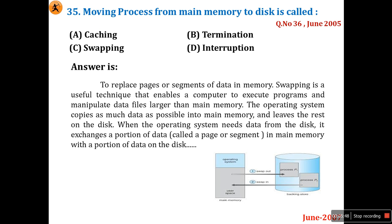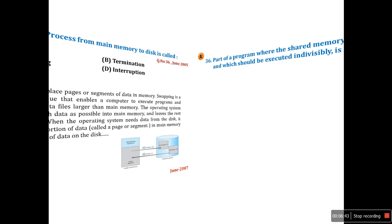Swapping is a useful technique that enables a computer to execute programs and manipulate data files larger than main memory. The operating system copies as much data as possible into main memory and uses the rest on disk. When the OS needs data from disk, it exchanges a portion of data in main memory with a portion on disk — this is called swapping. So option C is the right answer.